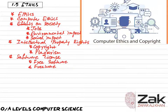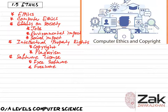Freeware is software that is distributed free of charge. It is usually fully functional with no expiry date. The author retains the copyright to the program, meaning you can use and distribute it, but you cannot alter the source code.